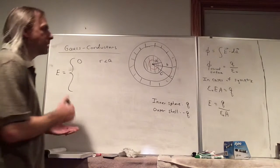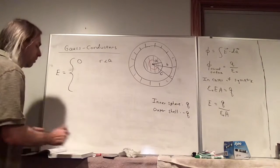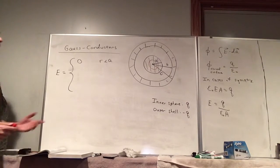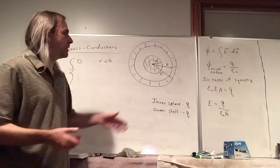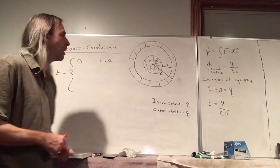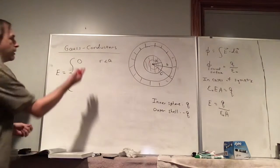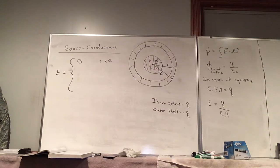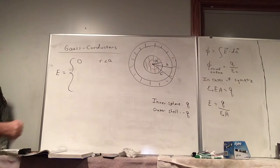I probably over-explained that — logically that didn't even make sense. We used the fact that the electric field is zero to show that the flux is zero, to conclude that the electric field is zero — kind of went in a circle. We can just say the electric field is zero because it's inside a conductor and there are no moving charges.